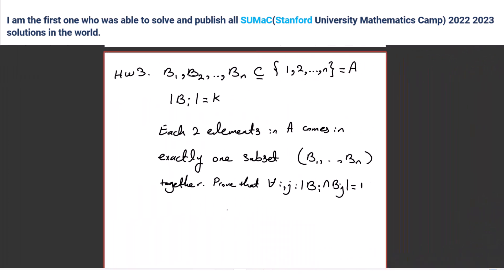Okay, so the first thing I did is I said — I don't know if this is helpful — but n times k choose 2 is equal to n choose 2. Let me write b₁ to bₙ, set n₁ to be n, so then each of them is k. I set that equal to n choose 2.